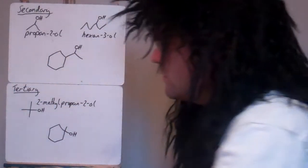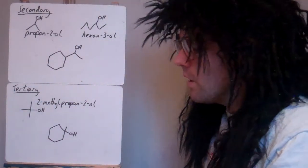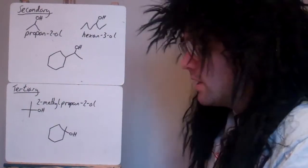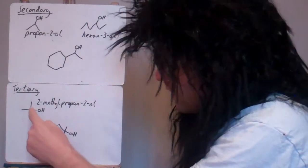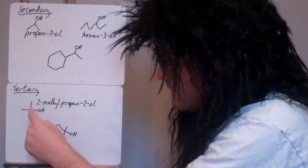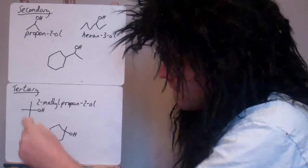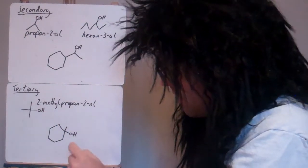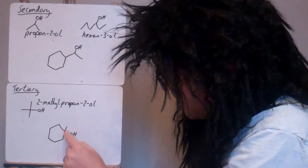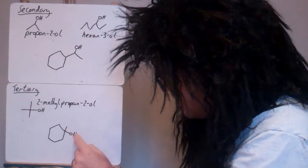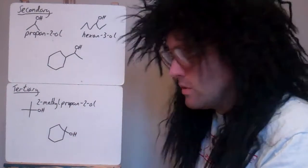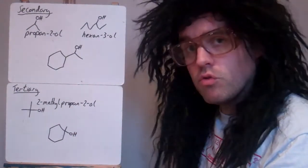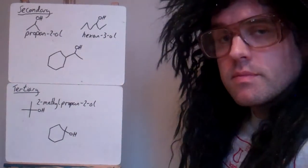Tertiary alcohols — the carbon that's attached to the OH is attached to 3 other carbons. So here, this carbon is attached to the OH: 1, 2, 3. This carbon here is attached to the OH — it's attached to this one, and this one, and this one — so 3 carbons, so again it's tertiary. All right. Thank you.